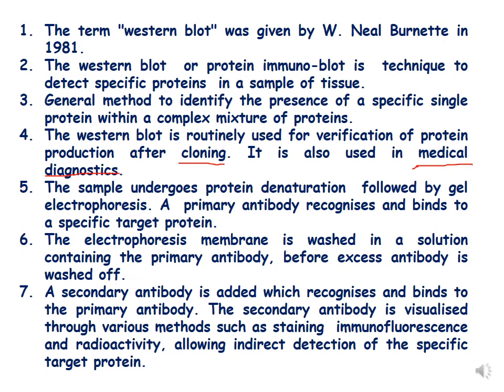In Western blot, the protein sample undergoes denaturation, followed by gel electrophoresis. After that, a primary antibody recognizes and binds to a specific target protein. The electrophoresis membrane — PVDF or nitrocellulose — is washed in a solution containing the primary antibody, then excess antibody is washed off and a secondary antibody is added. The secondary antibody can be visualized through staining, immunofluorescence, or radioactive methods, allowing indirect detection of the target protein.